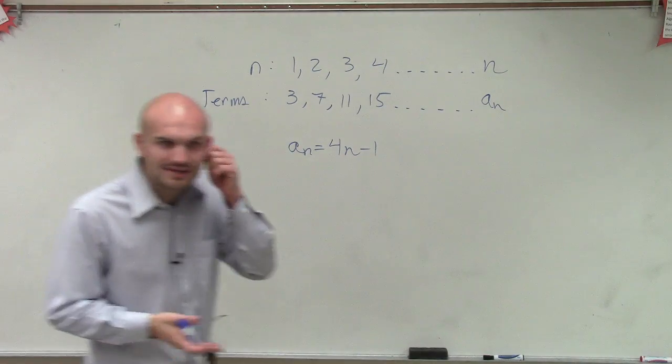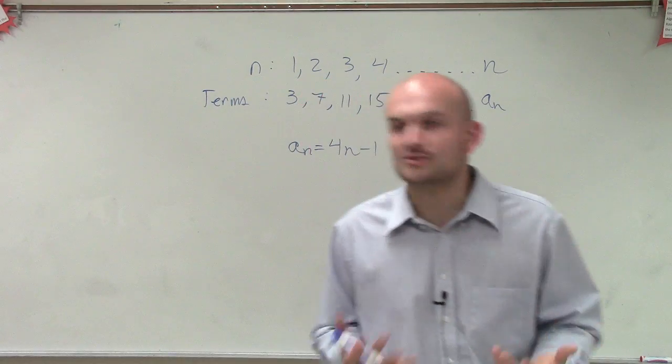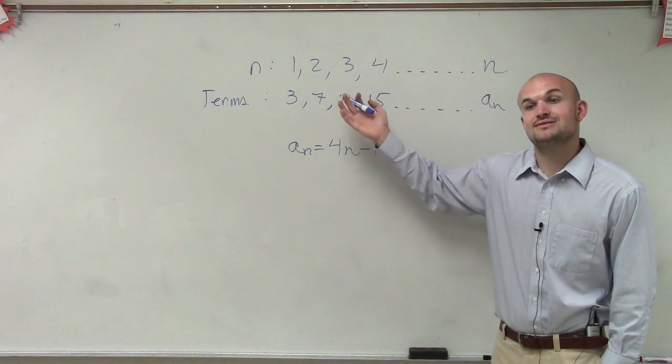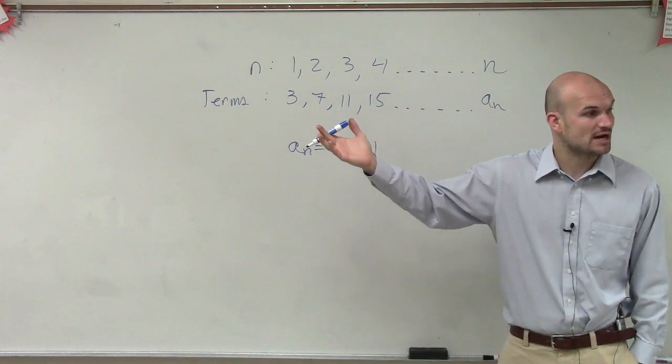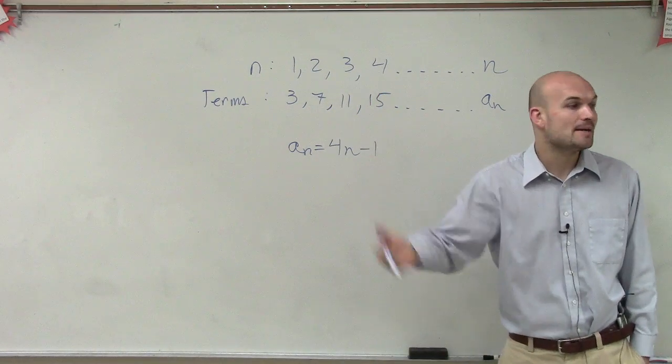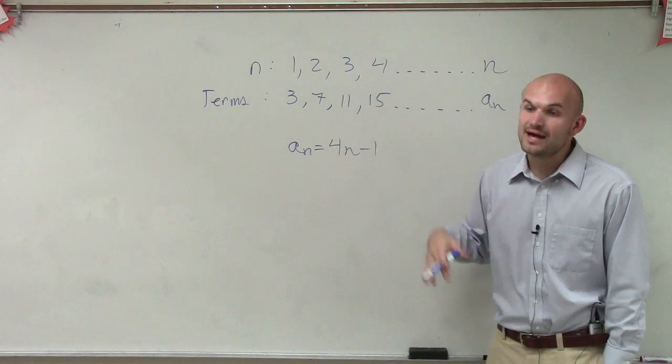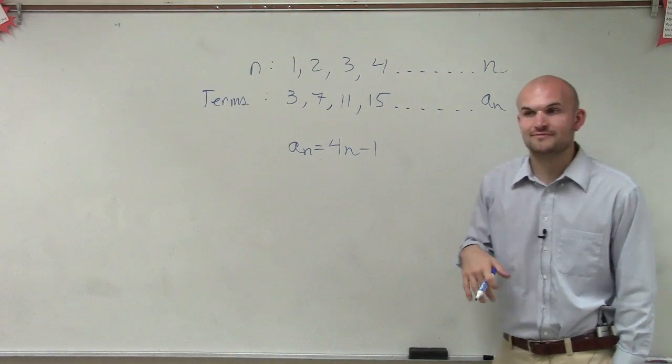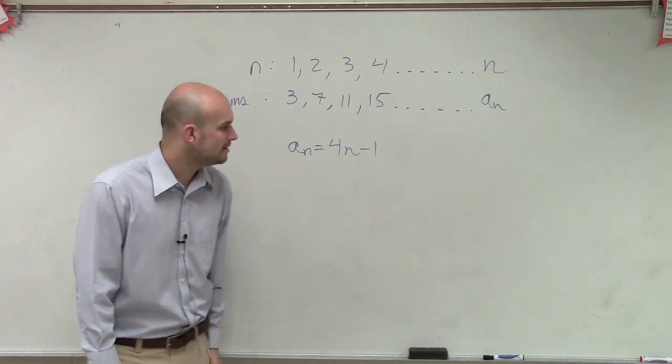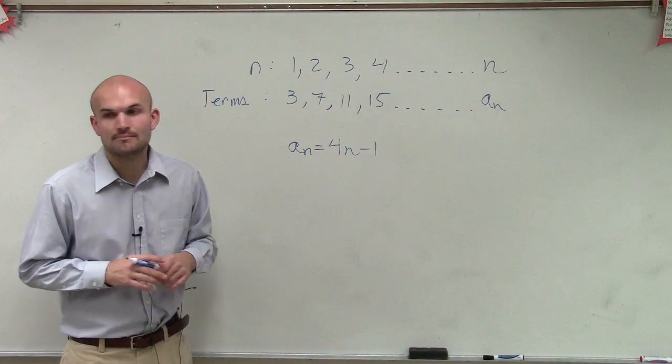So again, these aren't going to come very simple to you until you get enough practice. The main important thing is, I always like to first look at adding and subtracting, then look at multiplying and dividing, then look at the combination of them. And if those don't work, we'll have to see what are some other possibilities. But for this basic one, our a sub n equals 4n minus 1.